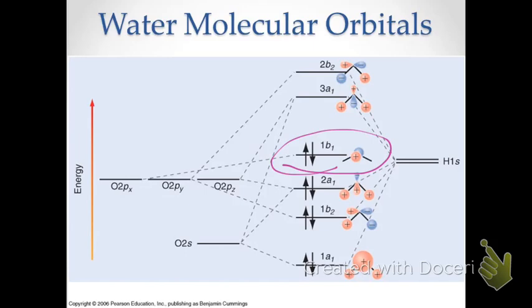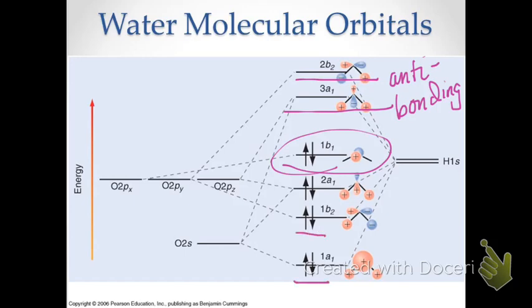There are two high-energy orbitals: one with A1 symmetry and one with B2 symmetry. These orbitals are higher in energy than the atomic orbitals, so they are anti-bonding orbitals. As noted, we had eight valence electrons from the atoms involved in the molecule, so we fill up our orbitals with two electrons each. This shows the basic electronic structure of the ground state of water.